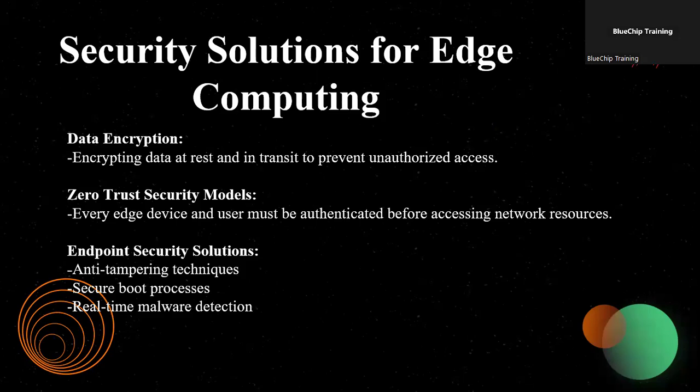To mitigate security risks, edge computing systems must implement strong data encryption, protecting information both in transit and at rest. Zero-trust security models ensure that every device and user is authenticated before gaining access to the network. Additionally, endpoint security solutions such as secure boot processes and real-time malware detection help defend against cyberattacks and tampering, ensuring that edge computing remains both efficient and secure.